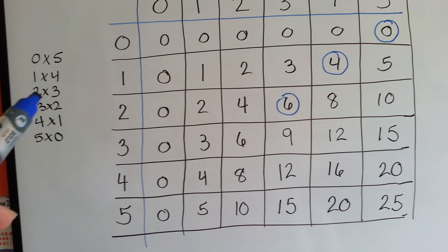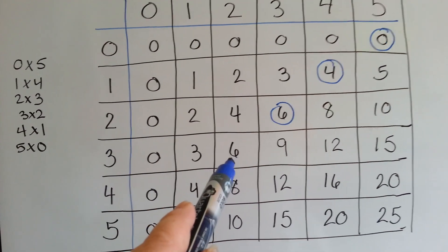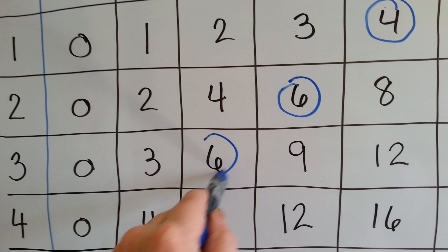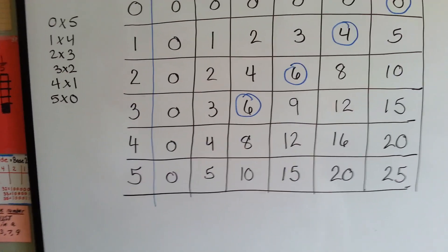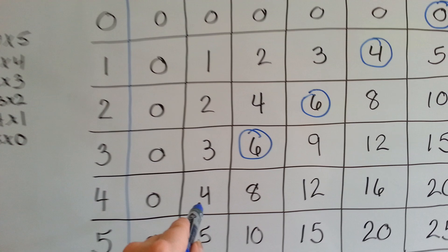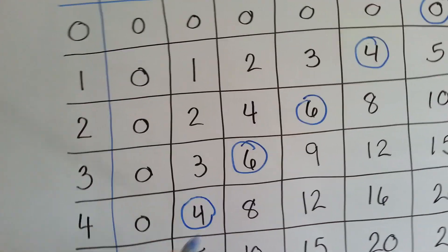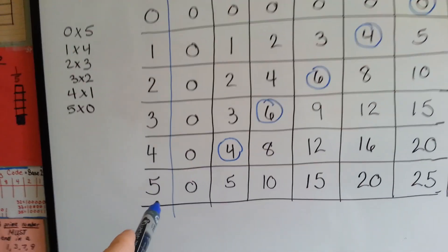The next one is 3 times 2. 3 times 2. I bet you knew I was already going to do that one, didn't you? The next one is 4 times 1, and I bet you know where that is, don't you? 4 times 1. And then we have 5 times 0.